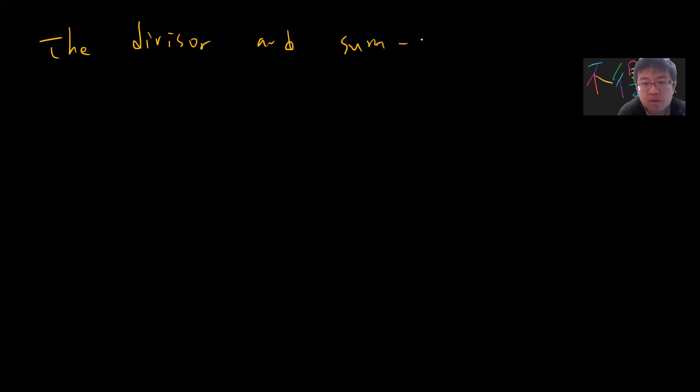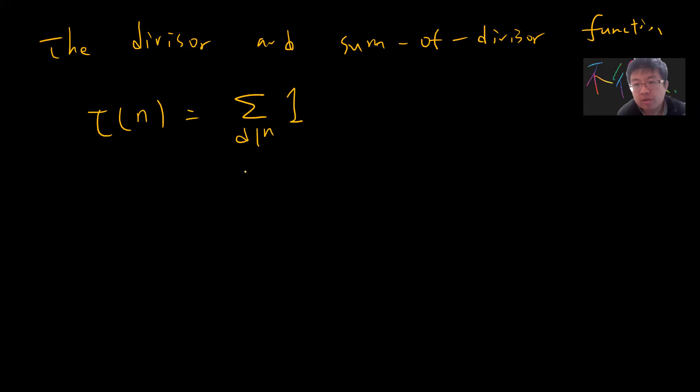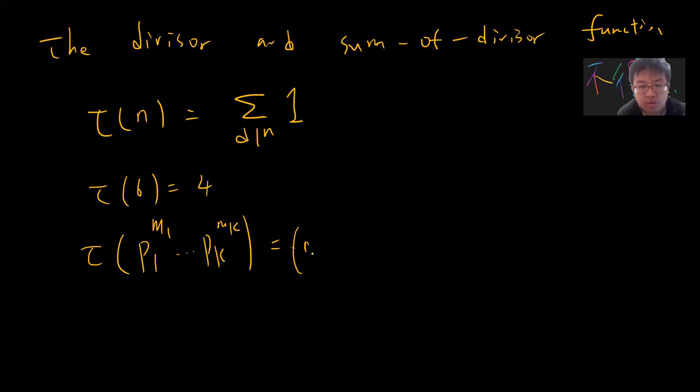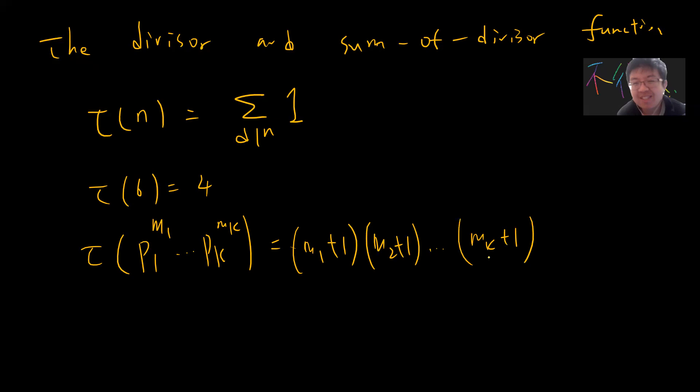Next, the divisor function: τ(n) is defined as the sum over all d dividing n of 1, i.e., the count of divisors. For example, τ(6) = 4. For n = p1^m1 · … · pk^mk, you can show τ(n) = (m1+1)(m2+1)…(mk+1), since for each prime factor you can choose an exponent from 0 to mi.